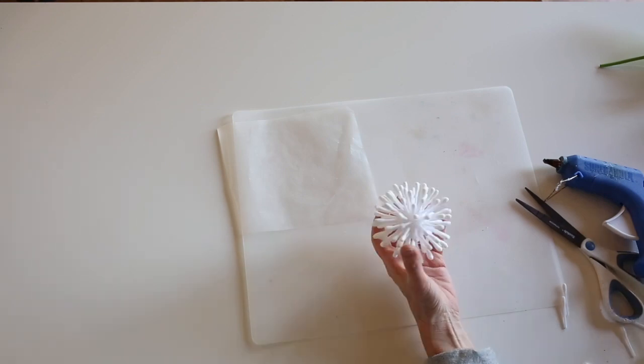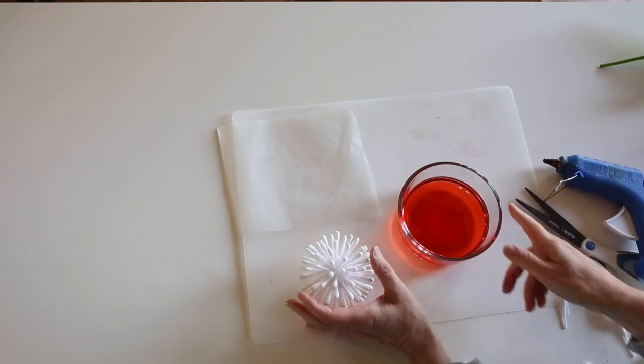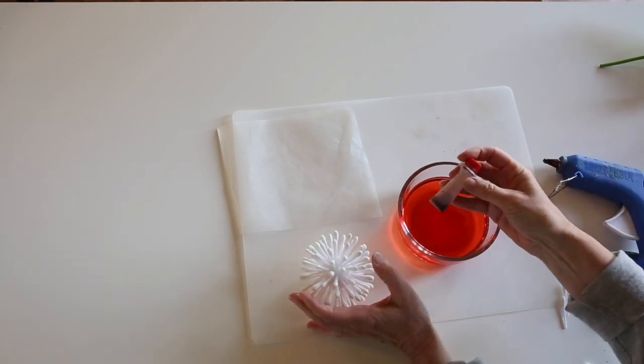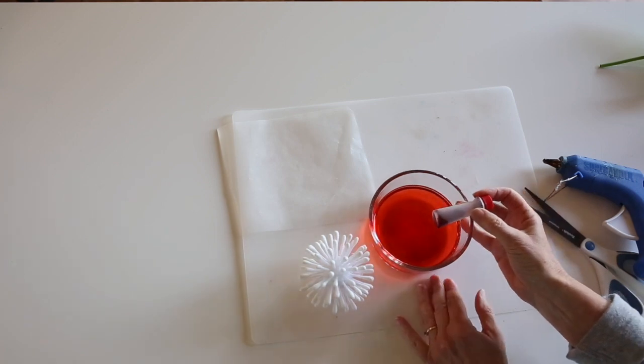The next step will be coloring it. And I've got a bowl here that I have put some drops of food coloring in. You can make it as dark as you want. It's up to you.